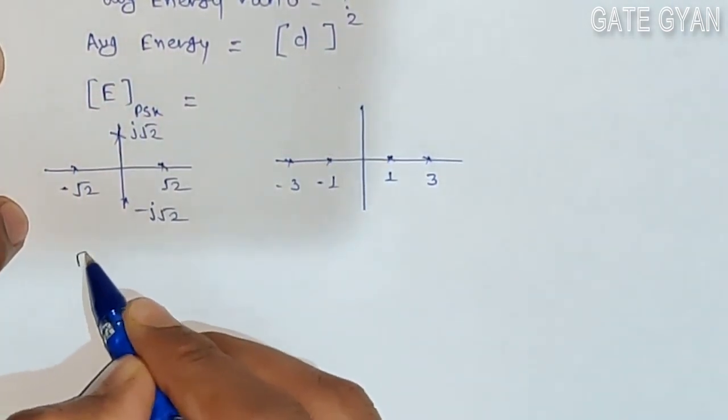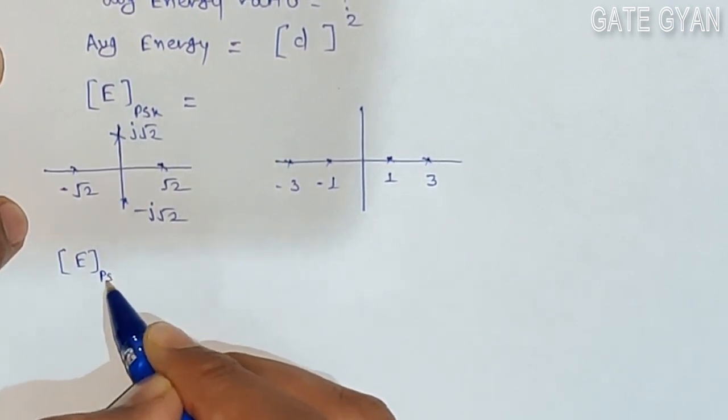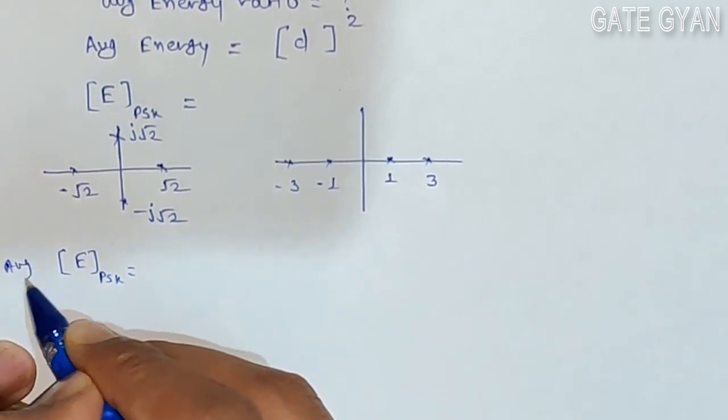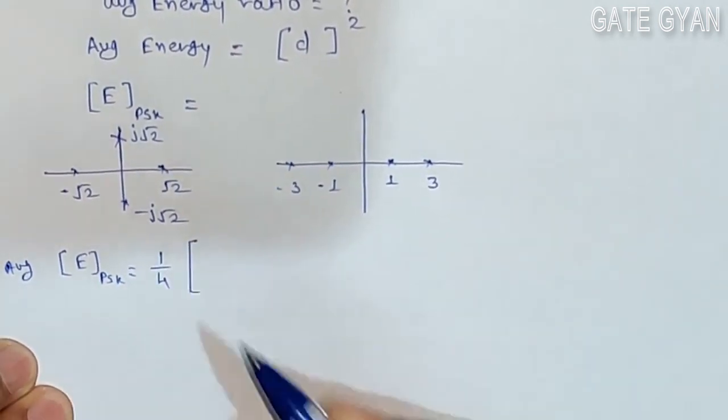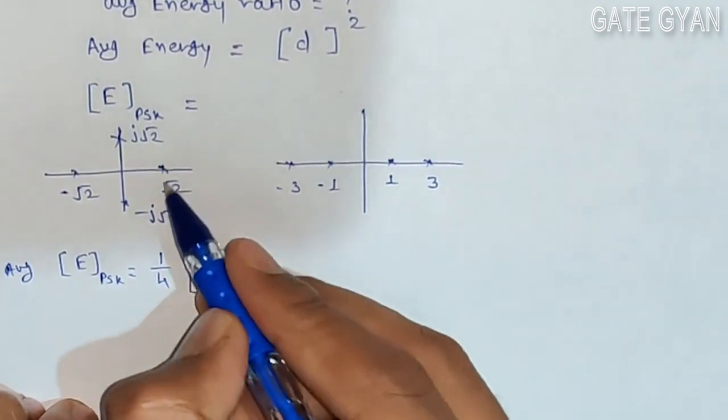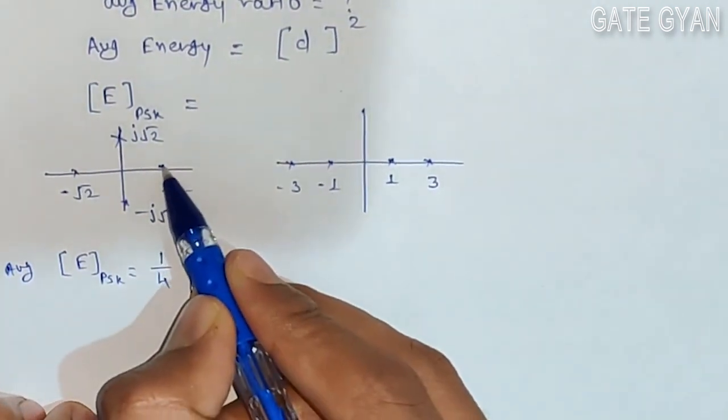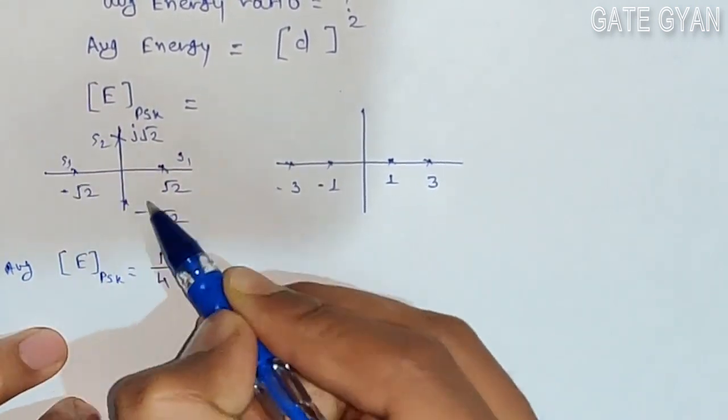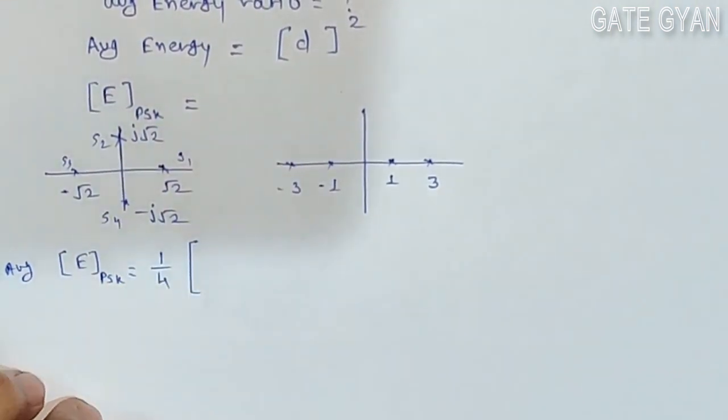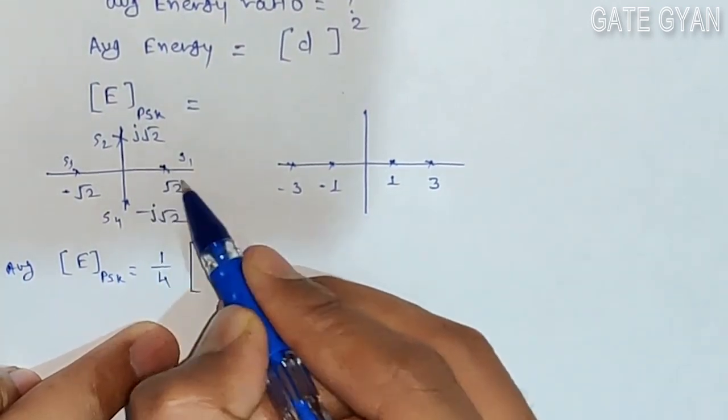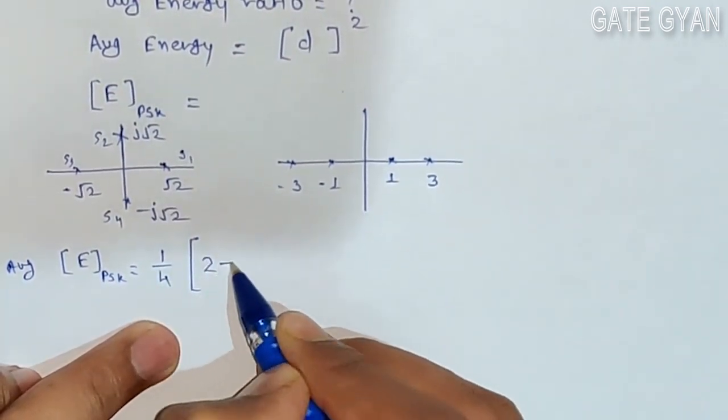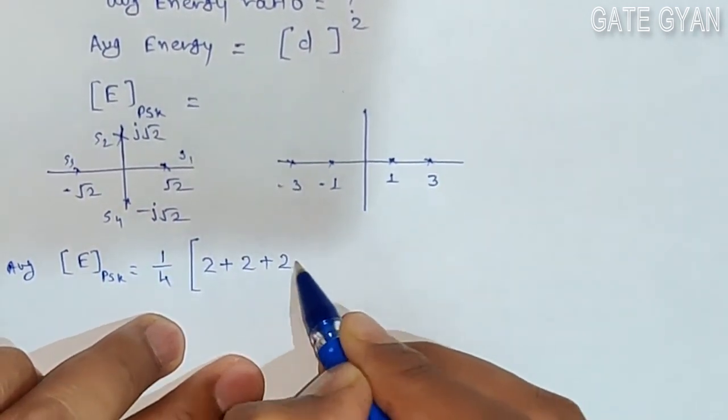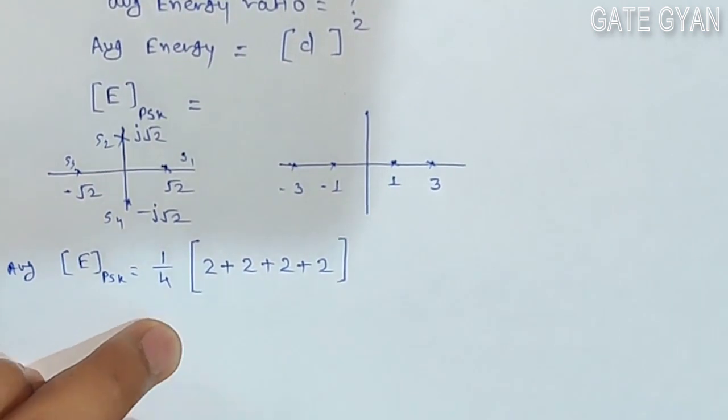To calculate the average energy for PSK, it will be 1/4 of the total energy. Total energy will be distance squared. For this particular point, if it is s1, s2, s3, and s4, the distance is √2, so √2 squared will be 2. For all of these points, the energy will be 2 only, so the average energy if you calculate it will be 2.